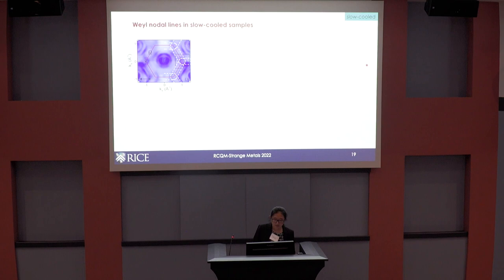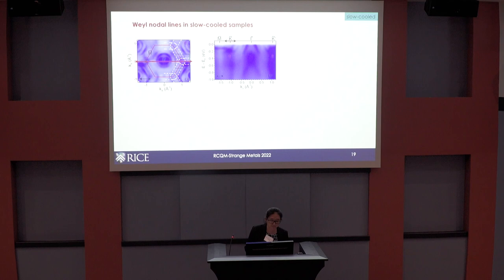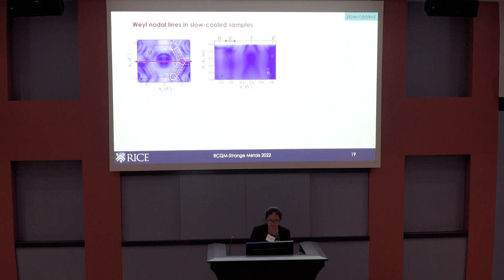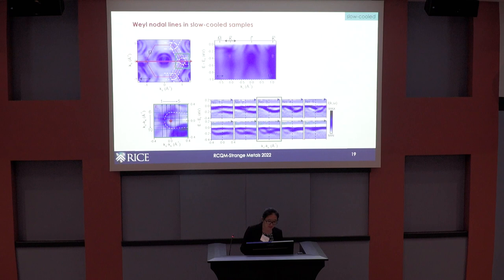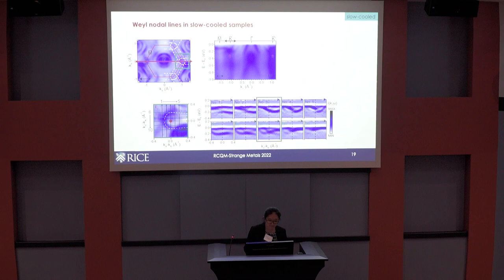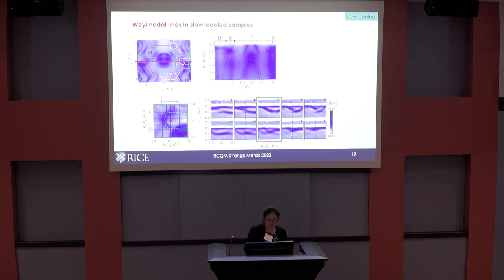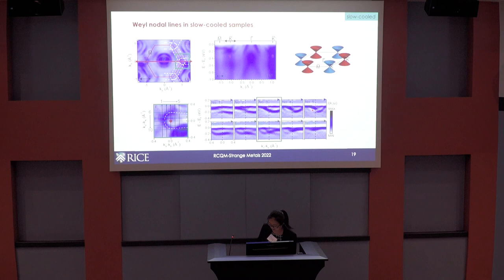For the slow-cooled crystals: taking a high-symmetry cut across the zone center in the Gamma-K-M direction, you can see at the K point there is a crossing between two bands. Zooming in around the K point with parallel and horizontal cuts, the green-boxed cut through the K point — shown as a second derivative to enhance visibility — reveals a band crossing at the K point. As you walk away from the K point on either side, a gap opens. This indicates a Dirac crossing at the K point in the slow-cooled crystal.